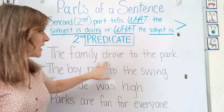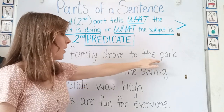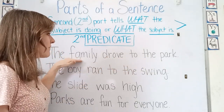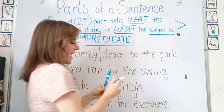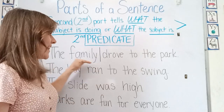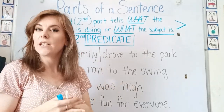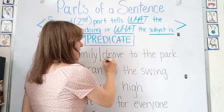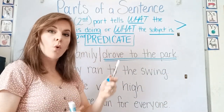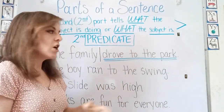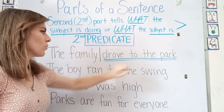The family drove to the park. Our subject is family, and the predicate part is telling us what the subject is doing. So what did the family do? They drove to the park. So the predicate is telling us what the family did — they drove to the park.